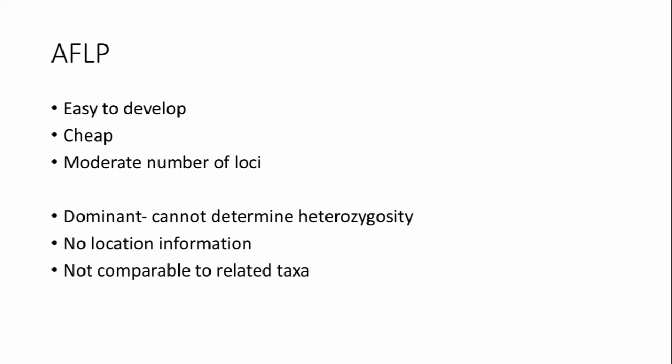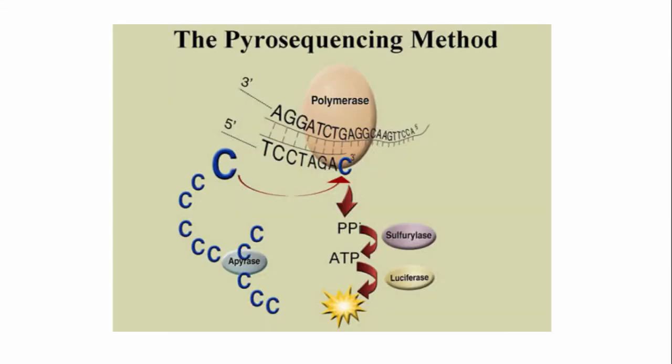Furthermore, they don't give us a lot of location information on where these restriction sites are in the genome. There are new methods that are rapidly changing how we do population genetics. And one of these is that there are new ways to sequence DNA. One of these is called pyrosequencing.